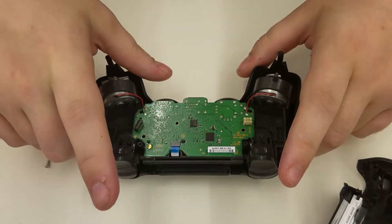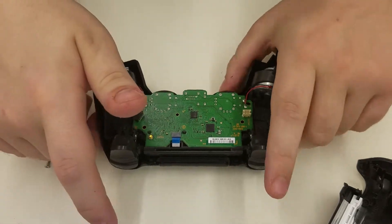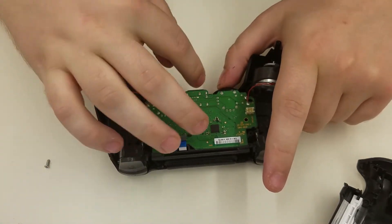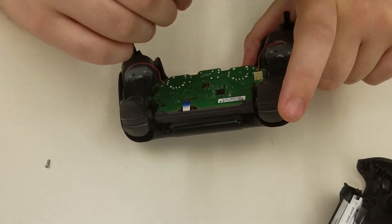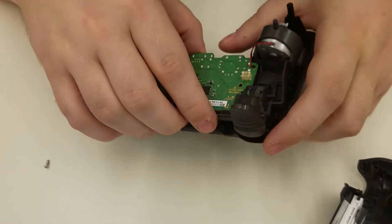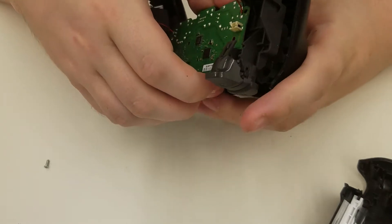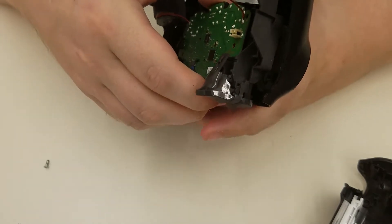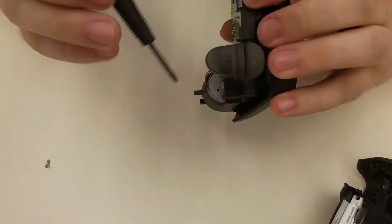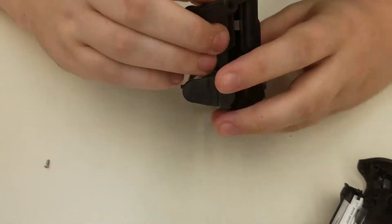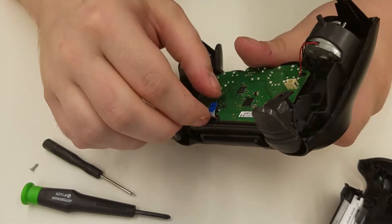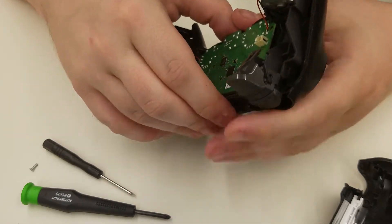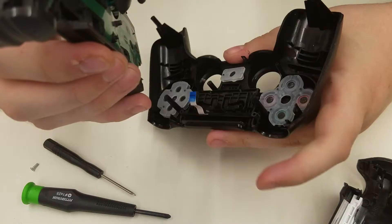The controller actually separates into the outer shell and the inner shell. They're connected by this little tab. So what you want to do is pull this apart, and then it separates like this.